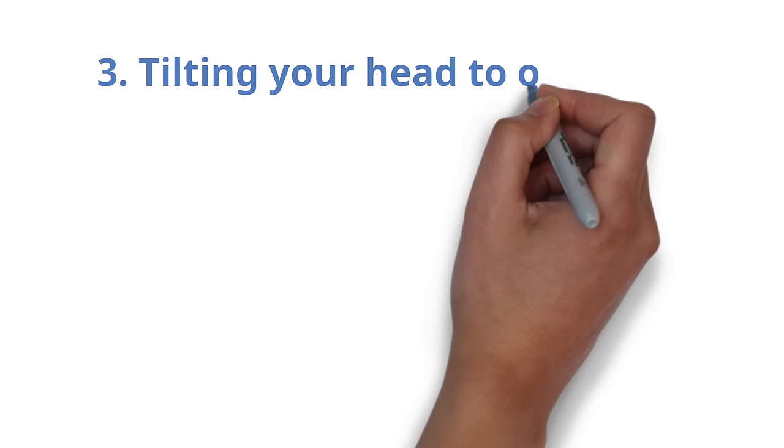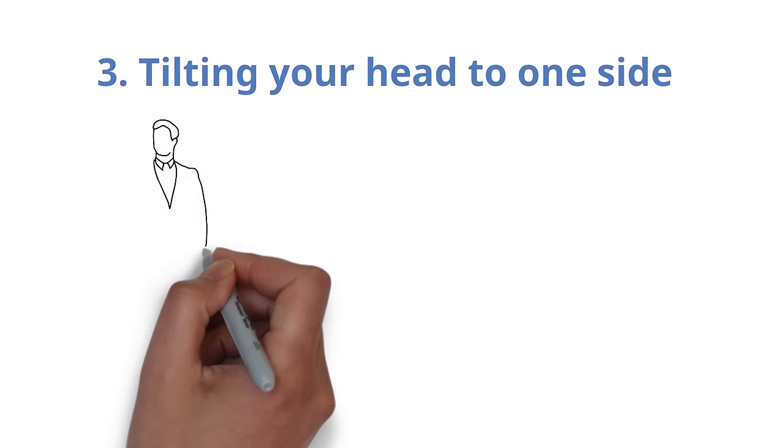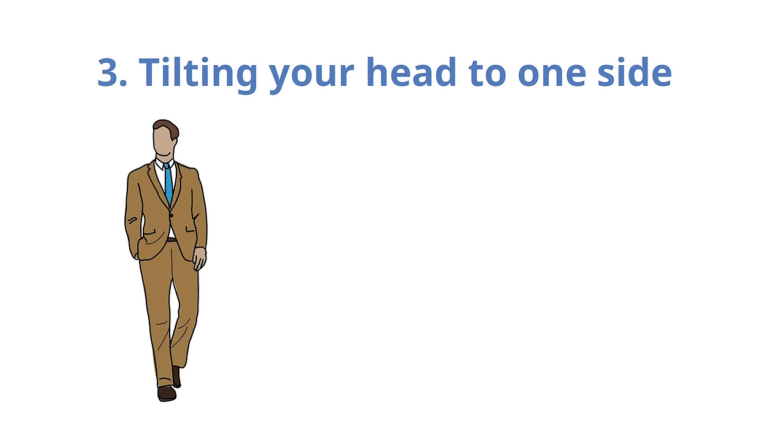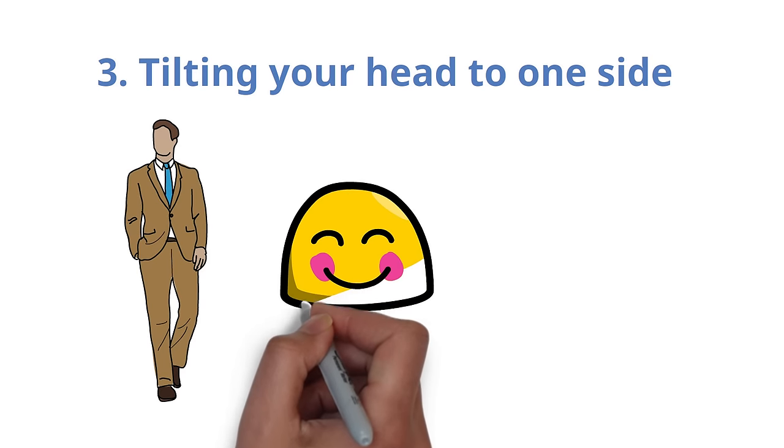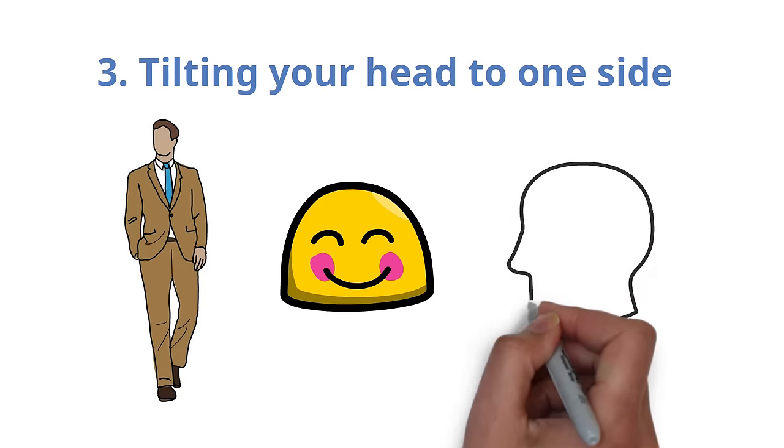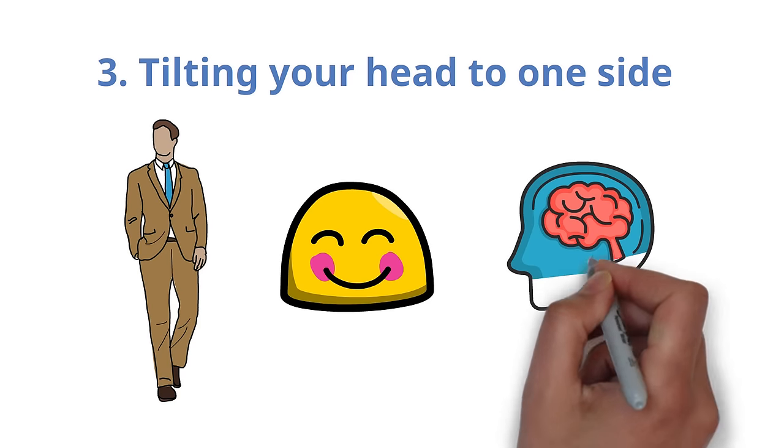Number 3. Tilting your head to one side. When you tilt your head to one side, it typically shows you're paying attention and are eager to learn more about what is being spoken. It might also indicate that you're concentrating quite hard.